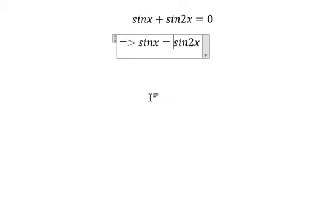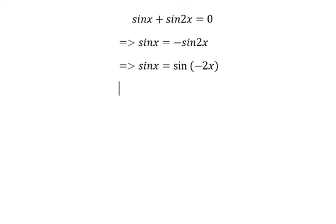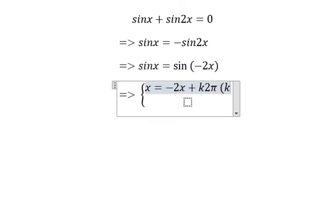Because we put it over the equal side, we have the negative, then we can put the negative inside the sine. So we can write: x equals negative 2x plus k times 2π, where k belongs to the integers.